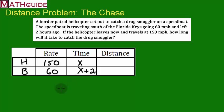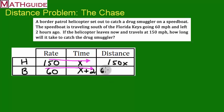I'd like to use only one variable for this problem, so I'll leave the helicopter's time as X. Since rate times time equals distance, I'll multiply across the table to get the distance column. Rate 150 times time X gives 150X for the helicopter. Then 60 times (X plus 2) gives the boat's distance. So the helicopter travels 150X, and the boat travels 60(X+2).